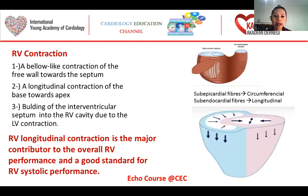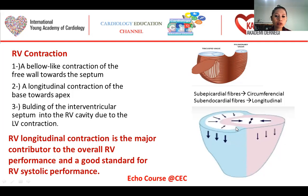The right ventricle has sub-epicardial fibers, which are circumferential, and sub-endocardial fibers, which are longitudinal. RV contraction is made from three major components: a bellows-like contraction of the free wall towards the septum, a longitudinal contraction of the base towards the apex, and a bulging of the interventricular septum into the RV cavity due to LV contraction. RV longitudinal contraction is the major contributor to overall RV performance and is a good standard for RV systolic performance.